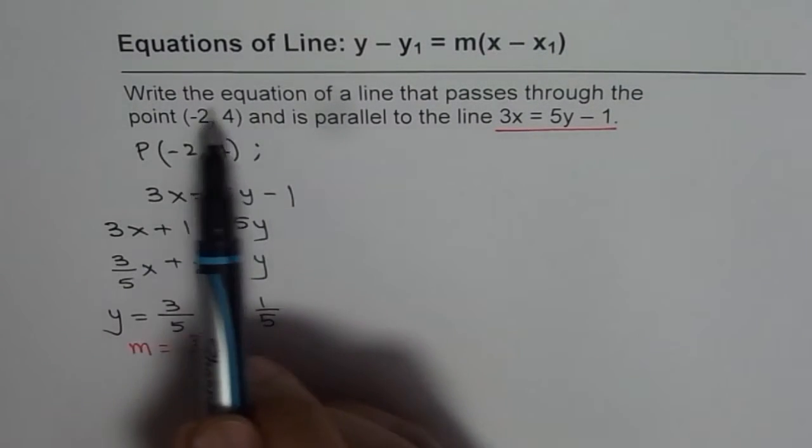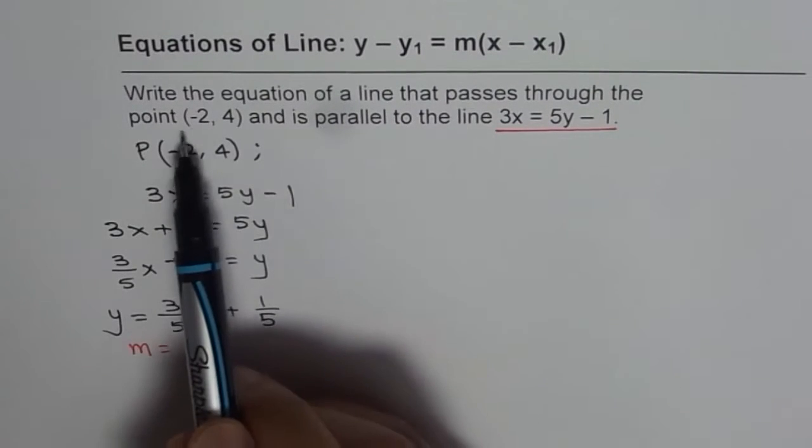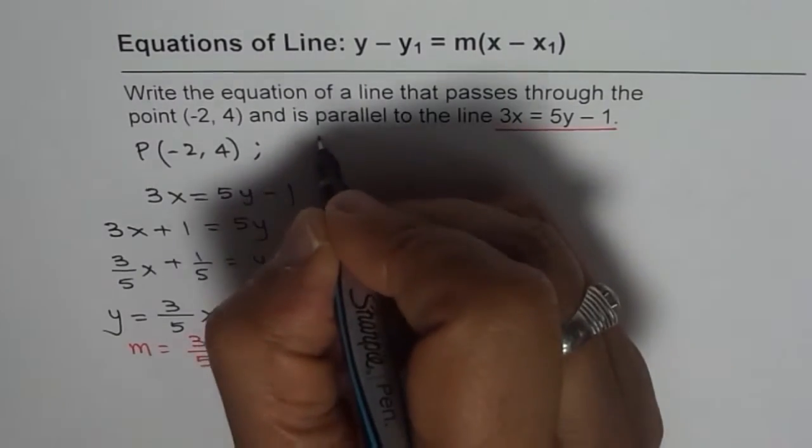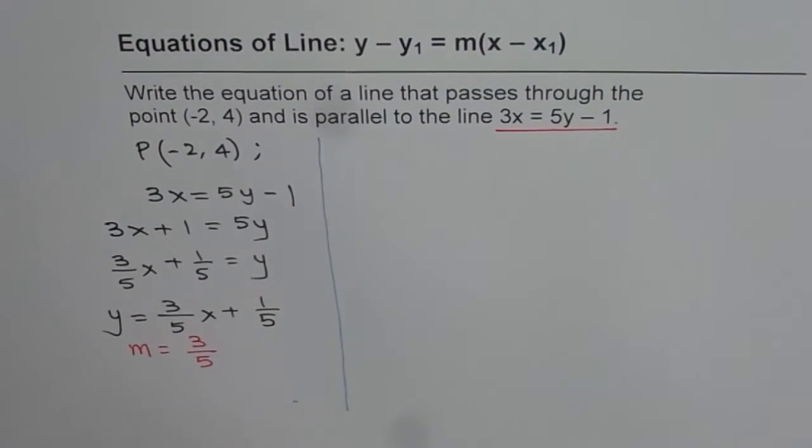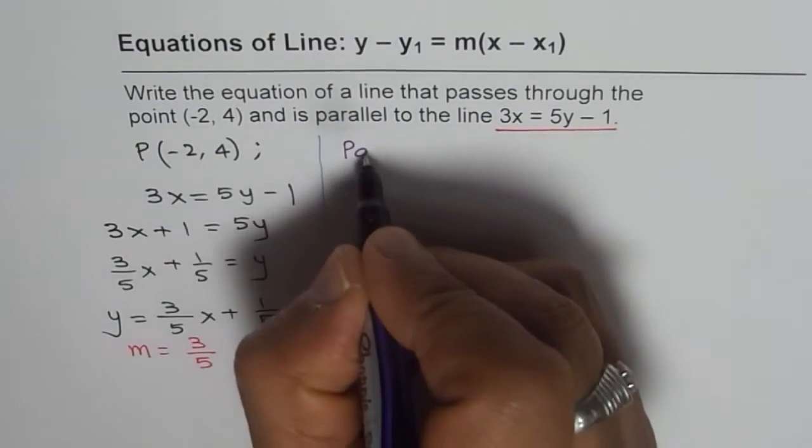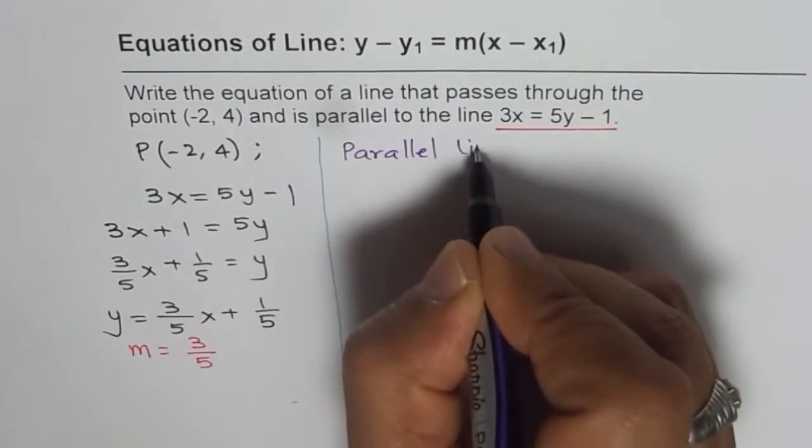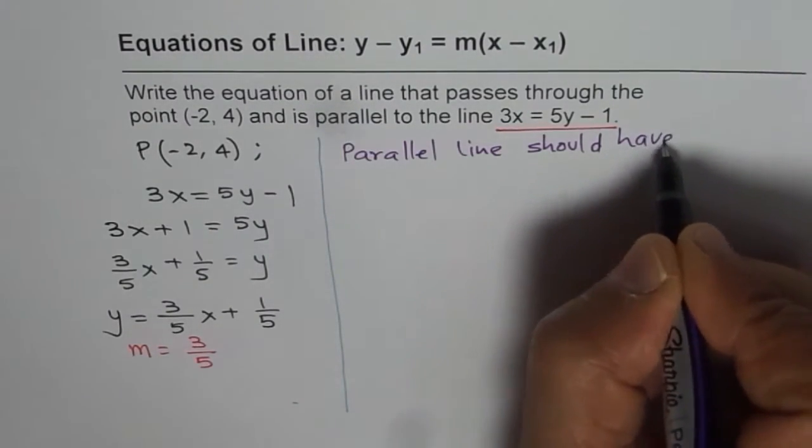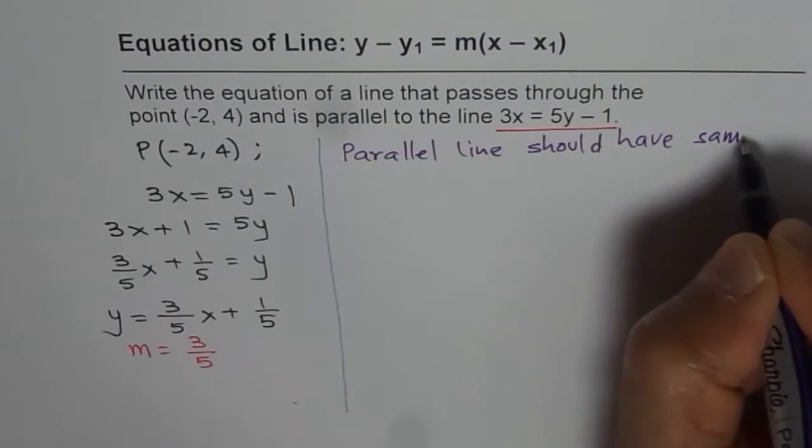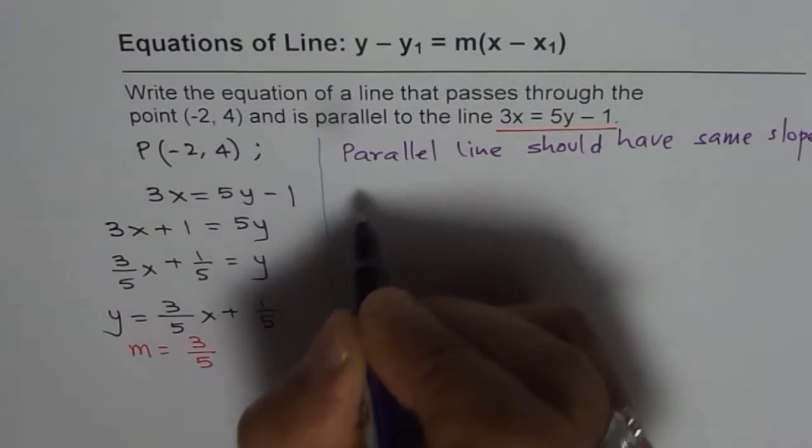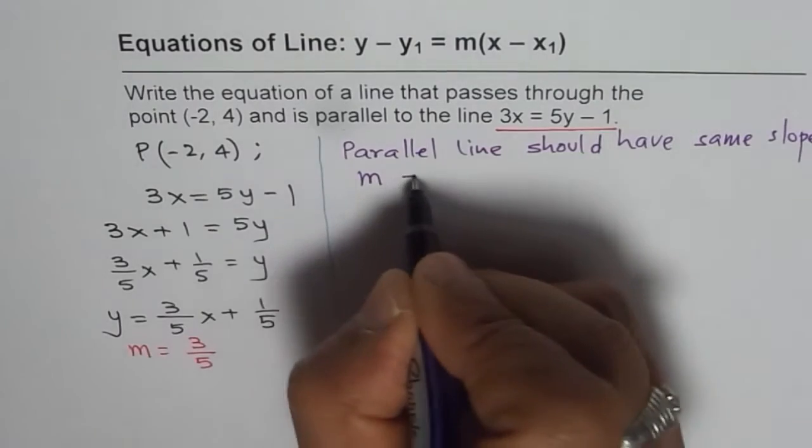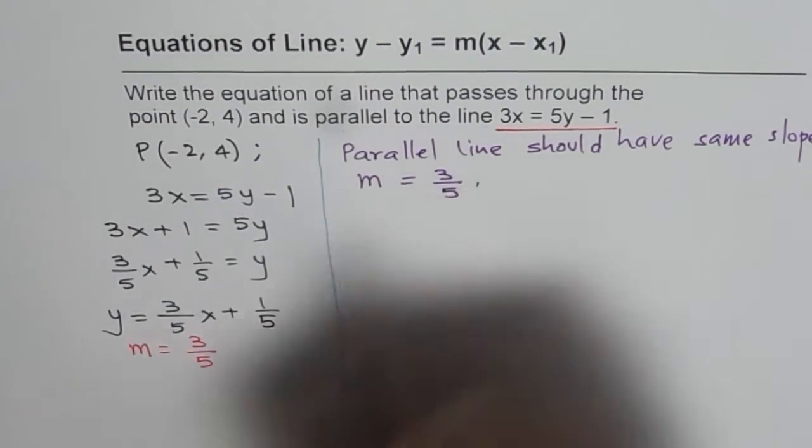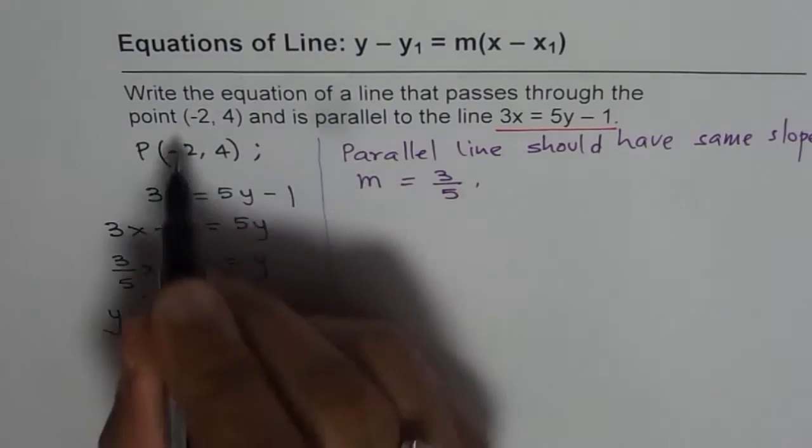Now let's read the question once again, it says write the equation of a line that passes through the point minus 2, 4 and is parallel to this line. So a parallel line should have same slope. We know parallel line should have same slope. And therefore, the slope of the line should be equal to the slope of the given line, which is 3 over 5.